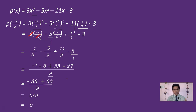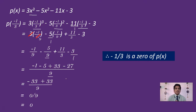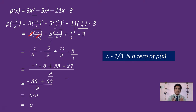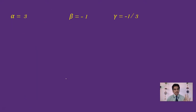Since substituting x = -1/3 gives 0, therefore -1/3 is a zero of the polynomial. We have now verified all three zeros: 3, -1, and -1/3.